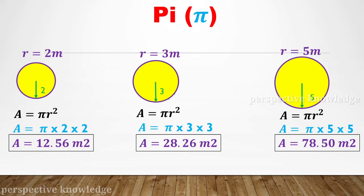The area of a circle is pi times r squared. For the first circle with radius 2 meters, the area A is equal to pi × 2 × 2. So the area of the circle with radius 2 meters is 12.56 square meters. For the second circle with radius 3 meters, the area is pi × 3 × 3, which equals 28.26 square meters.